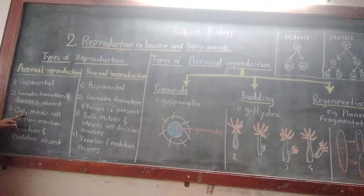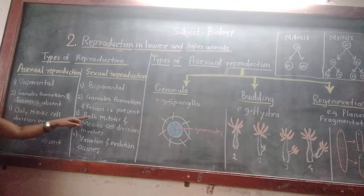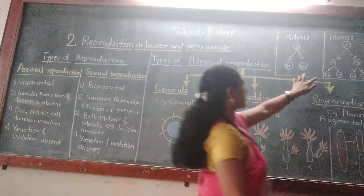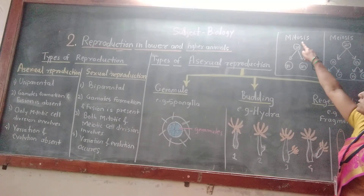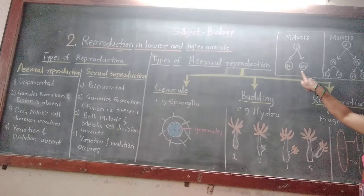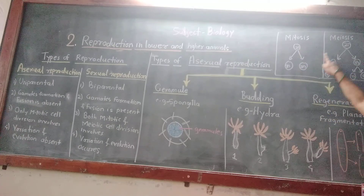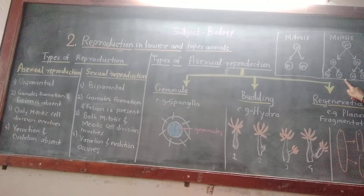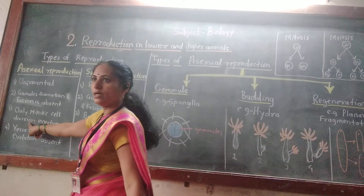The third difference: in asexual reproduction, only mitotic cell division occurs. Whereas in sexual reproduction, both mitosis as well as meiosis occur. Mitosis means one parental cell divides into two daughter cells having the same number of chromosomes, and the genetic makeup remains the same. In meiosis, one parental cell divides into four daughter cells having half the number of chromosomes — by this process, gamete formation occurs. Meiosis occurs in sexual reproduction and does not occur in asexual reproduction.